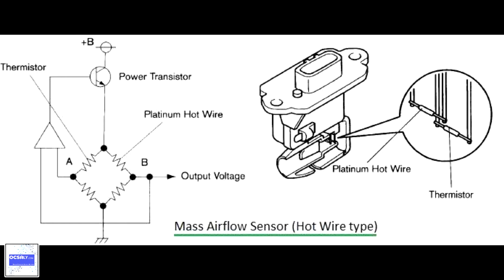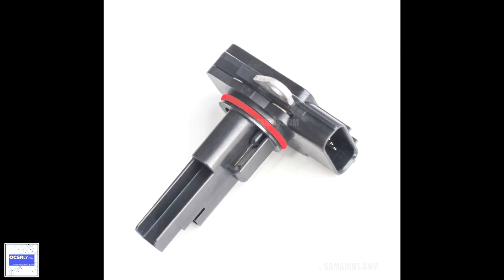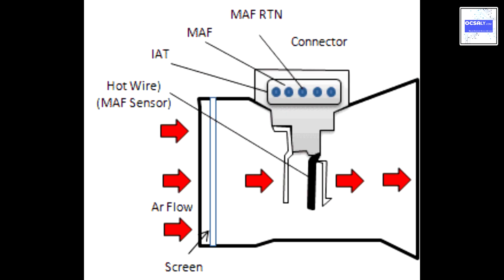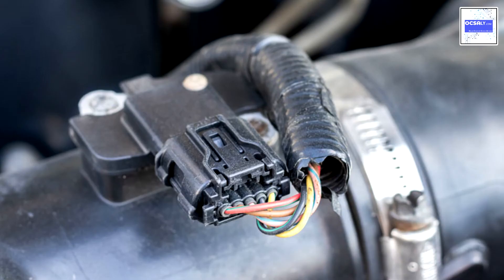When a MAF sensor is used in conjunction with an oxygen sensor, the engine's air/fuel ratio can be controlled very accurately. The MAF sensor provides the open-loop controller predicted air flow information, and the oxygen sensor provides closed-loop feedback in order to make minor corrections to the predicted air mass. Since around 2012, some MAF sensors also include a humidity sensor.